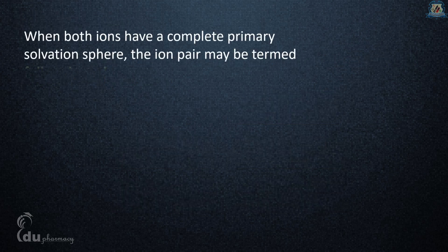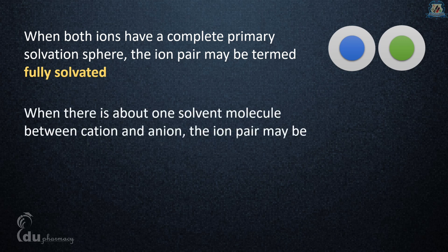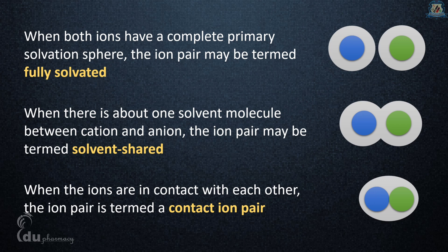When both ions have complete primary solvation sphere, the ion pair is termed fully solvated. When there is about one solvent molecule between cation and anion, it's termed solvent-shared. When ions are in contact with each other in a solvation sphere, it's termed contact ion pair. This is all about solute-solvent interaction from my side.